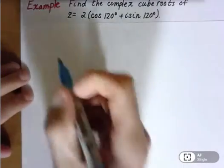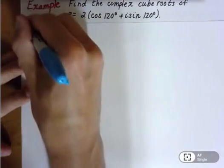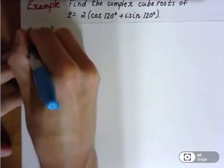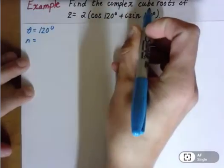So a lot of things I know right off the bat. I know my theta is 120 degrees. I know my n is actually equal to 3. It tells me cube roots.